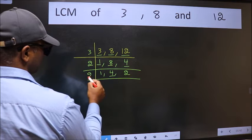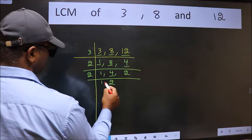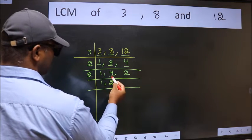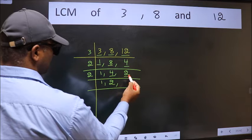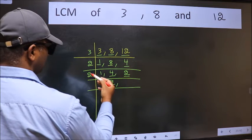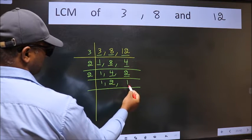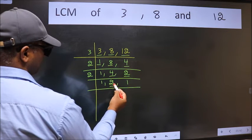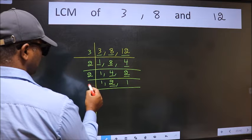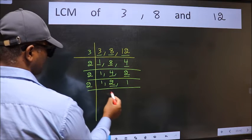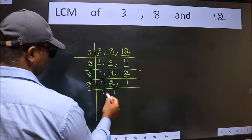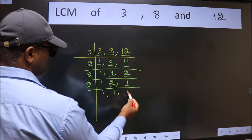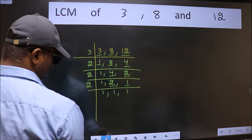4 is 2 twos, which is 4. The other number 2 — when do we get 2 in the 2 table? 2 ones are 2. Now here we have 2. 2 is a prime number, so 2 ones are 2. The other number 1 — write it down as it is.